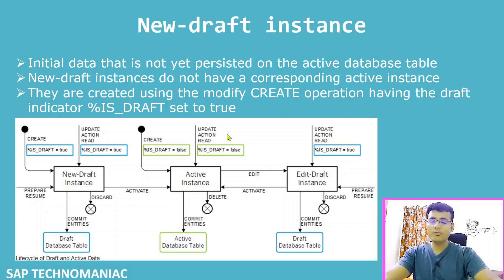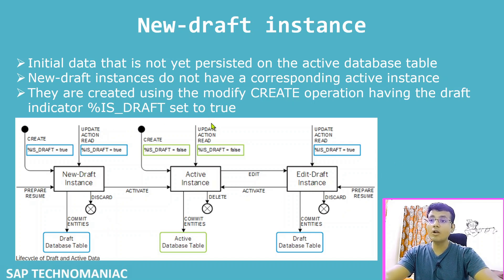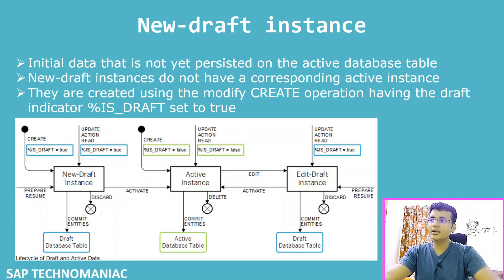It is important to understand the state diagram, which will repeat during the draft runtime. As mentioned, there are three states: new draft instance, active instance, and edit draft instance. The new draft instance is created when we perform the modify create operation — either through the EML statement or by clicking the create button on the Fiori UI. If your business object is draft-enabled, it will automatically come with is_draft equal to true and create the new draft instance.